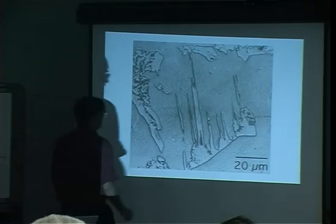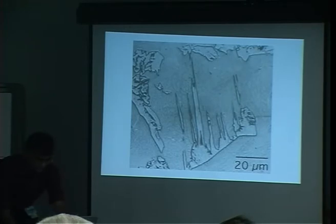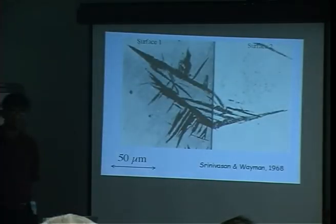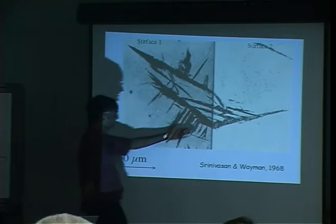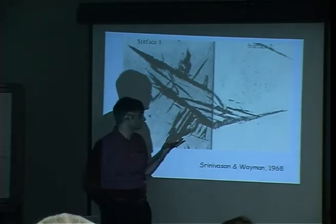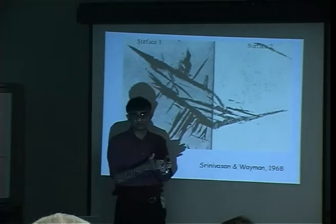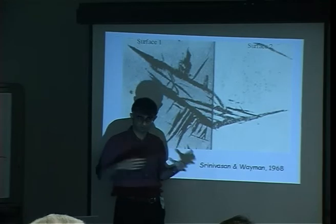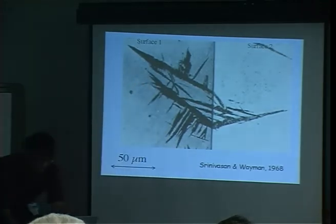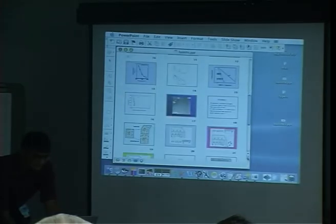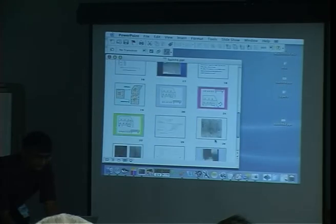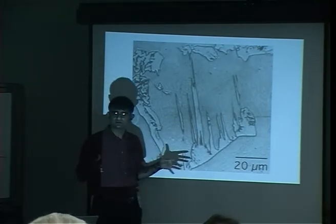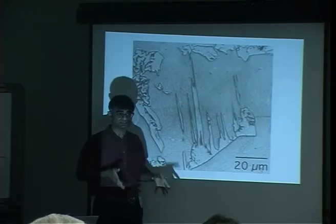Comparing optical micrographs: bainite appears dark — because there are many internal platelets creating lots of boundaries that are attacked by the etchant. Widmanstätten ferrite, at the same scale, etches white, meaning there is very little internal structure inside that plate — it appears as essentially a single platelet.